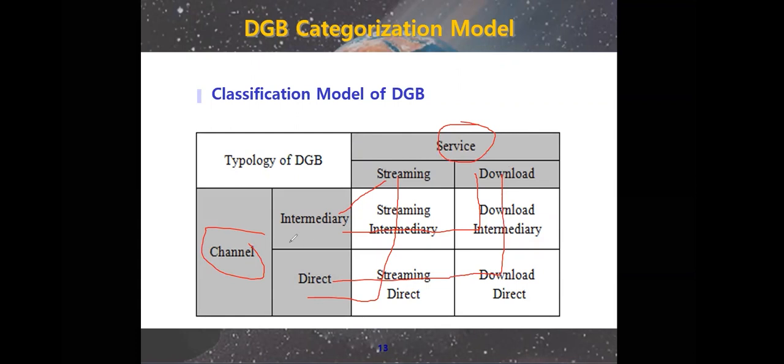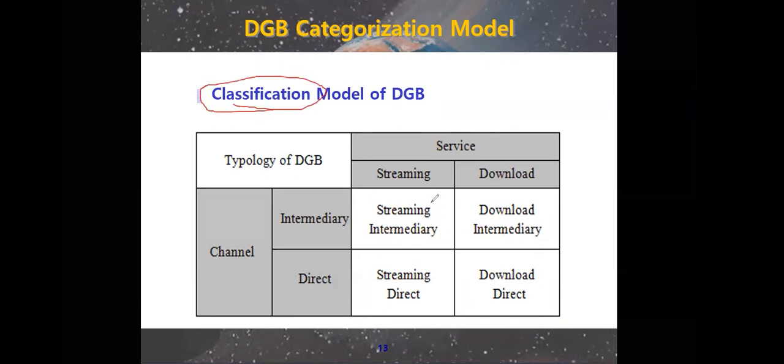So by this way, we combine it. The classification means you divide the model of the DGB, how you divide it. So sometimes you don't have the product, you are just the middle man in it, and the product service is streaming. So you combine this one sometimes. Sometimes it's downloadable, but still you are not the owner. This is the second case.